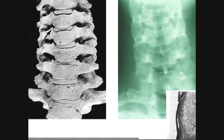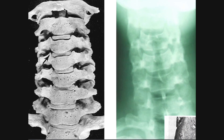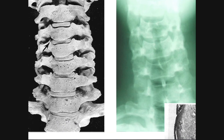On this slide we have X-rays showing some of the uncovertebral joints. Here we can see C1, C2, C3, and C4. Notice C3 is the first vertebra that actually has these uncinate processes — C1 and C2 do not. Here is the uncinate process of C4 on the patient's right side, flanking the intervertebral disc. Here's the left uncinate process, and this area here would be the uncovertebral joint.